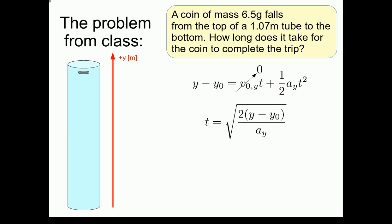Now in class, the coordinate system you chose defined the direction of the coin's motion to be y, with the positive y direction pointing upwards. In addition to the direction, you must also choose an origin when defining a coordinate system. In class, you defined the origin of the coordinate system to be at the bottom of the tube. So the bottom of the tube was just defined to be y equals 0.